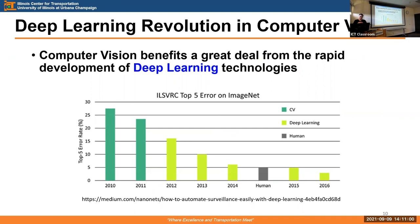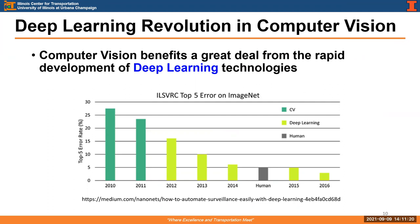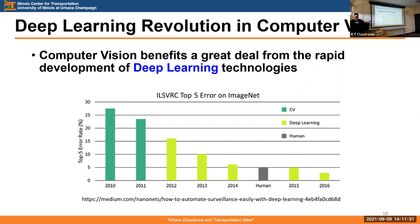Computer vision has a long history. Back in the 2000s, traditional techniques like edge detection and feature extraction gave error rates of about 23% on the ImageNet benchmark. Starting around 2009, applying deep learning frameworks caused error rates to drop dramatically — recently even falling below human-level performance. This shows we can benefit greatly by applying deep learning techniques to computer vision applications.